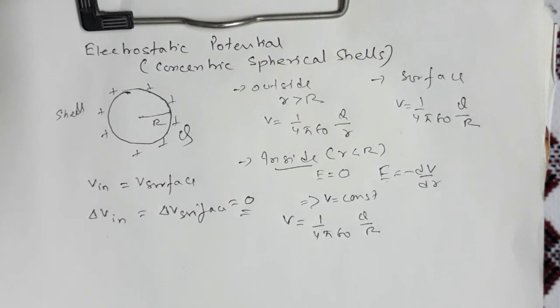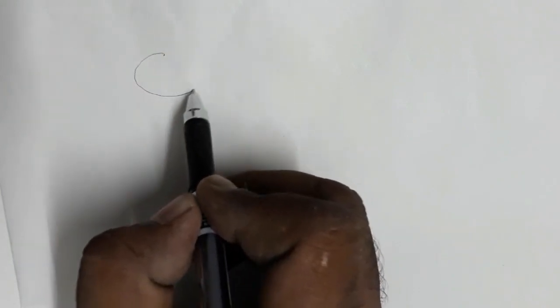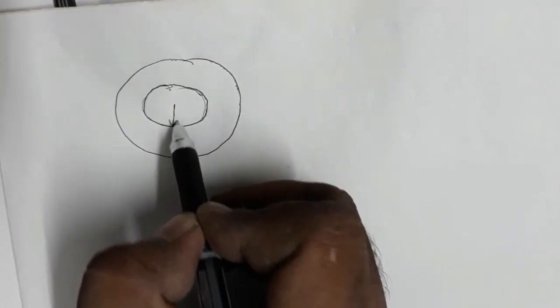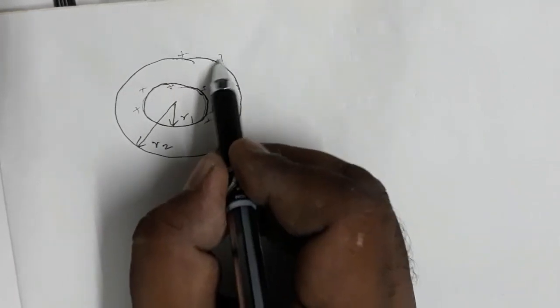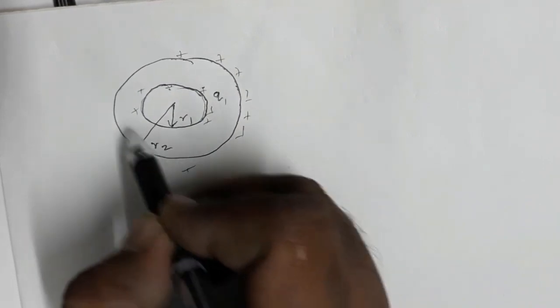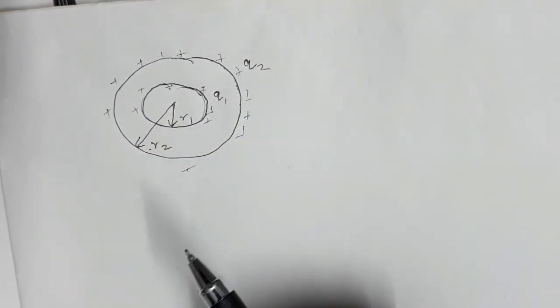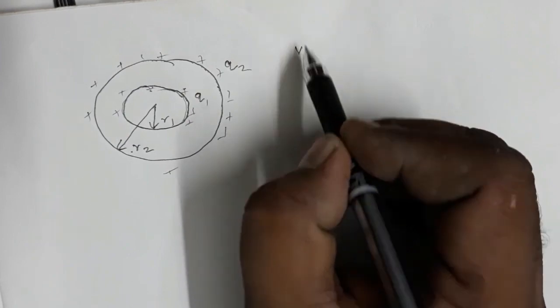Based on this concept, we will obtain the expression for electrostatic potential due to concentric spherical shells. Suppose we have two concentric spherical shells: an inner shell of radius r1 with charge q1, and an outer shell of radius r2 with charge q2. We want to calculate the potential on the surface of the outer shell, V2.